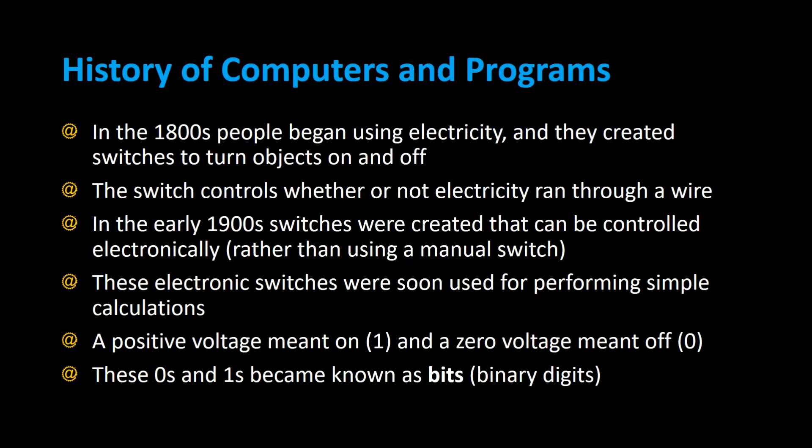History of computers and programs. Back in the 1800s, people began using electricity and created switches to turn objects on and off, kind of like a light switch. The switch controls whether or not electricity ran through a wire. In the early 1900s, switches were created that could be controlled electronically. These electronic switches were used for performing simple calculations. A positive voltage meant on or one, and a zero voltage meant off or zero, and these zeros and ones became known as bits, or binary digits.